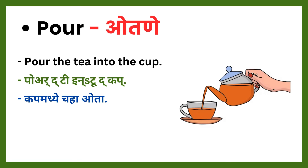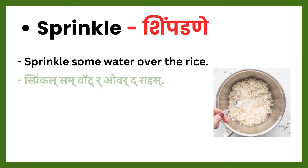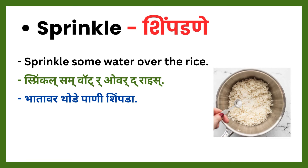Next verb: pour. Pour means otne. Pour the tea into the cup — cup madhye chaha ota. Next verb: sprinkle. Sprinkle means shimpade. Sprinkle some water over the rice — tandulave var thode pani shimpada.